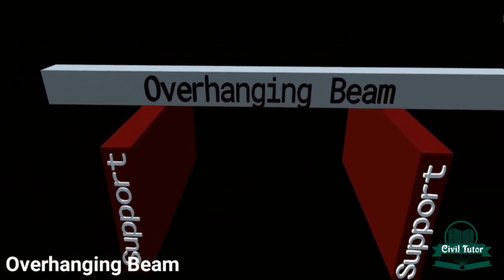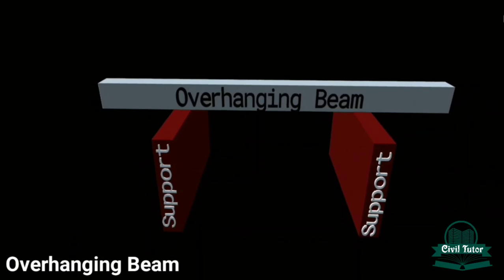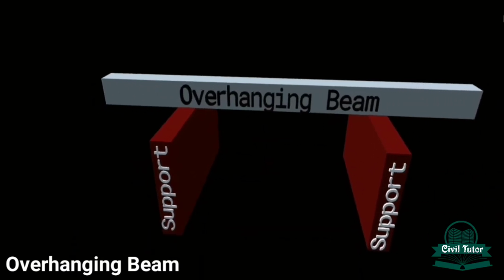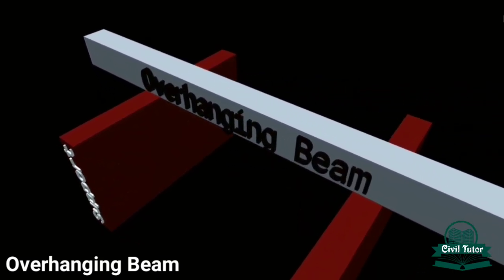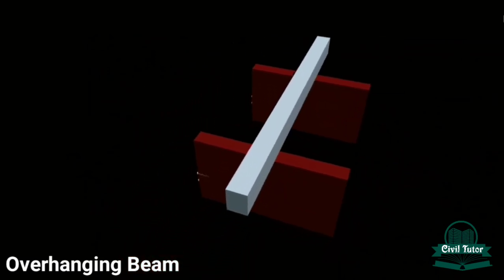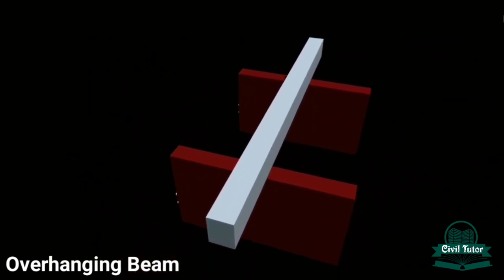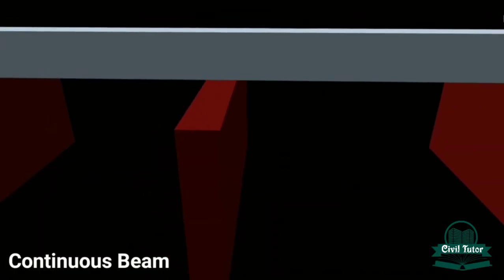The fourth one is the overhanging beam. It's a type of beam whose end portion is extended beyond its supports. You can clearly see in the visuals the span of the beam is extended beyond the end walls.